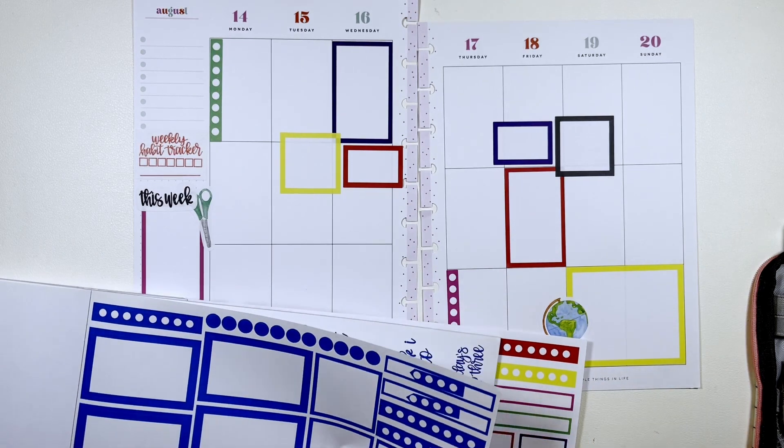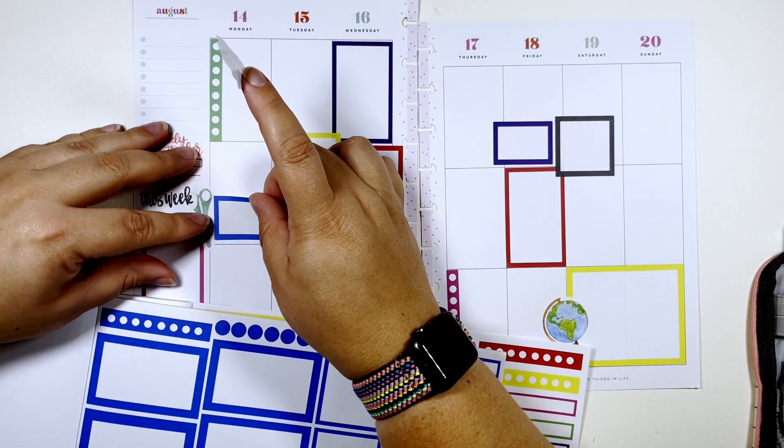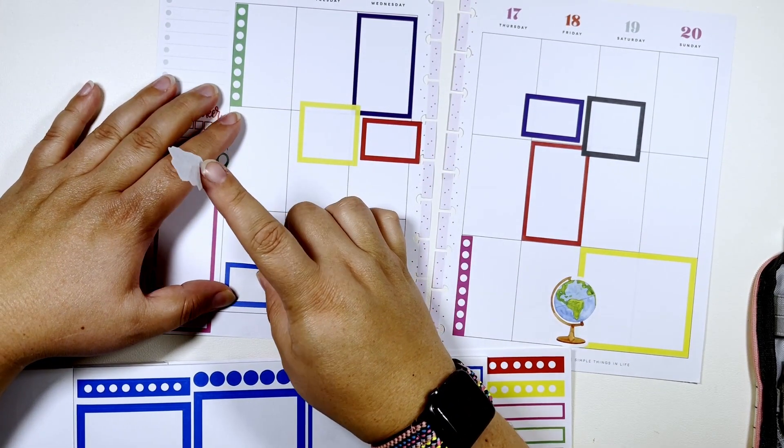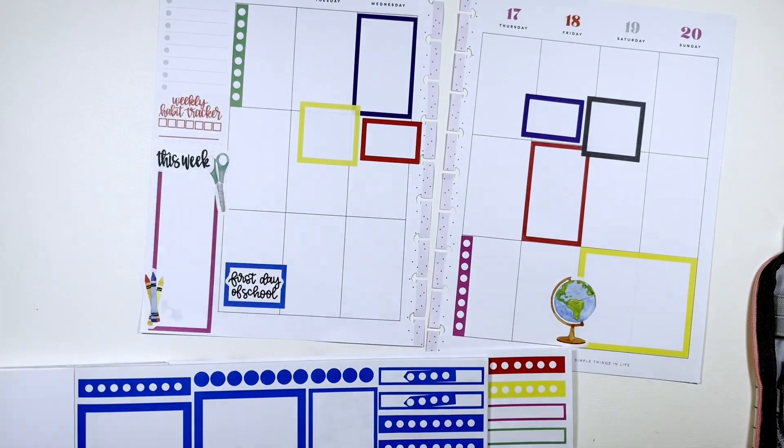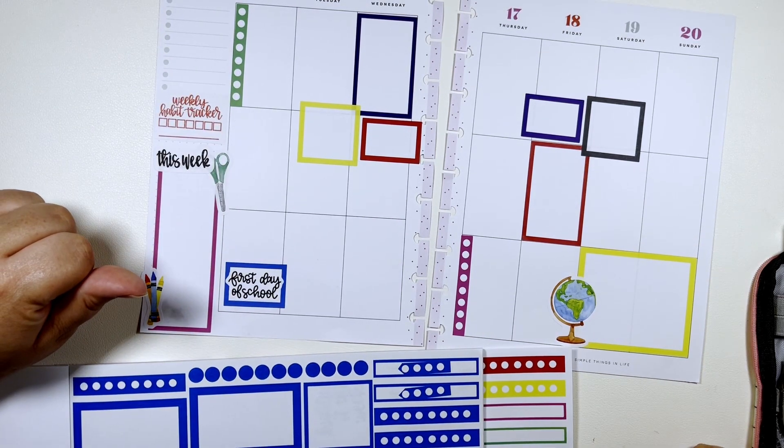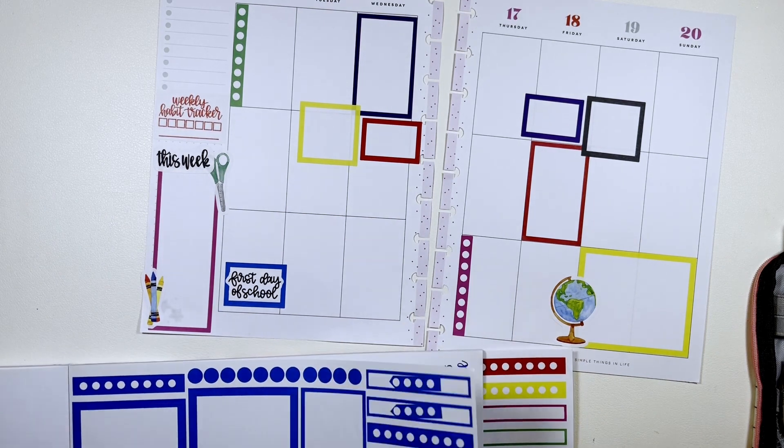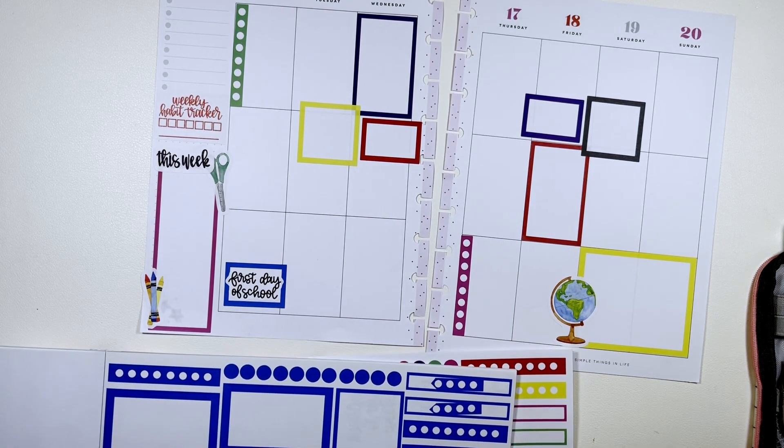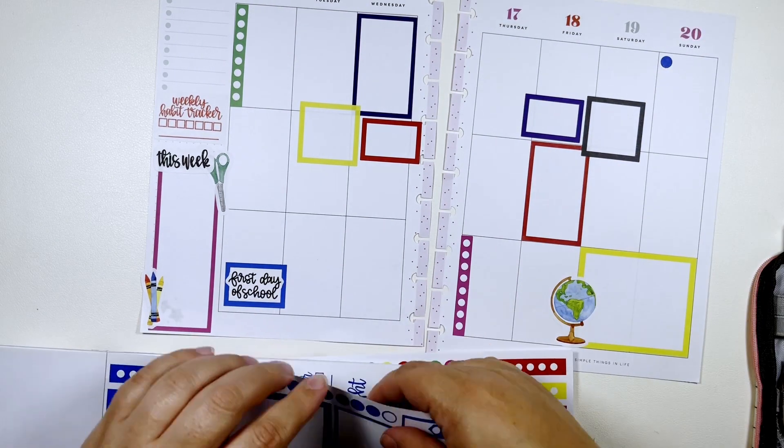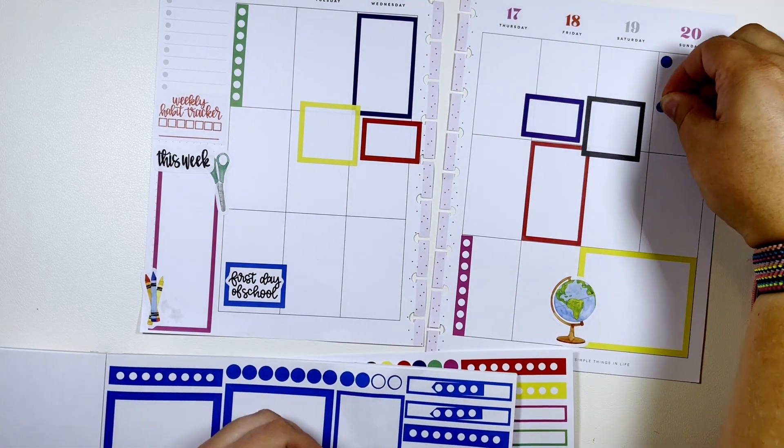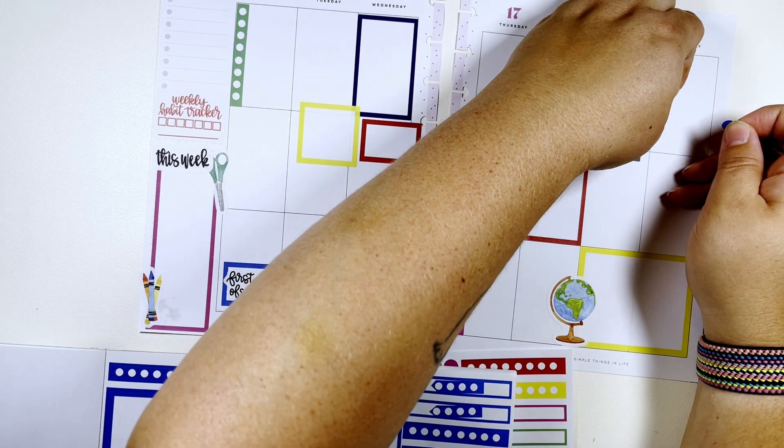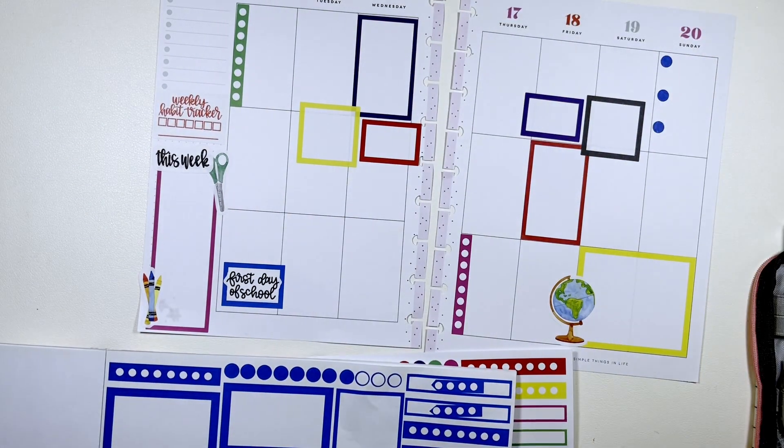We're gonna bring in some of this lighter blue. I'm gonna put it here, put it down here for first day of school, which I kind of feel like I should have flipped those but just so we have a little bit of that color on this side.